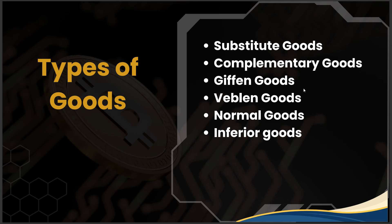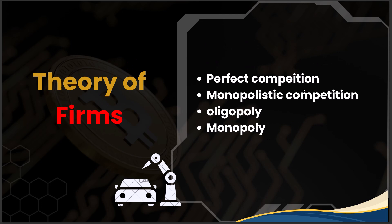Now let us look at the theory of firms. There are four types: perfect competition, monopolistic competition, oligopoly, and monopoly. In perfect competition, numerous firms produce identical goods — like multiple vegetable vendors in a market selling the same vegetables. There are no barriers to entry or exit, and both producers and consumers possess perfect market knowledge about prices.